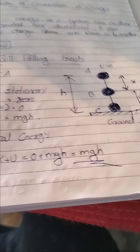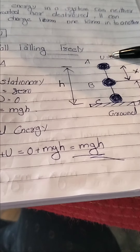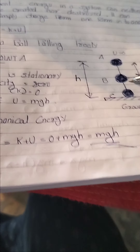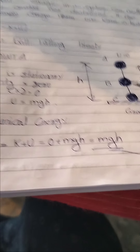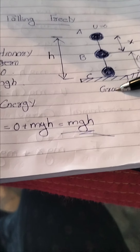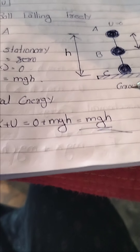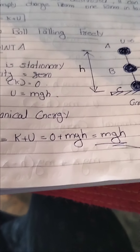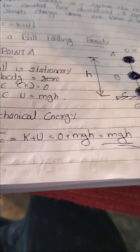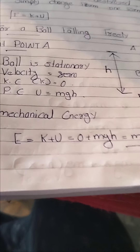So at point A total energy is mgh, at point B total energy is mgh, and at point C total energy is also mgh. This means that as the ball free falls from top to ground, at each and every point the total energy remains mgh — demonstrating the conservation of energy.